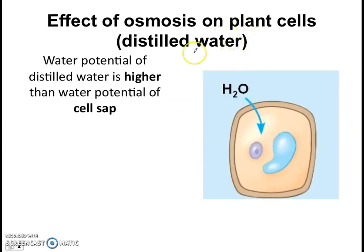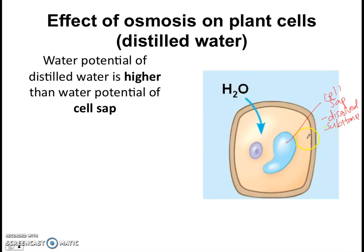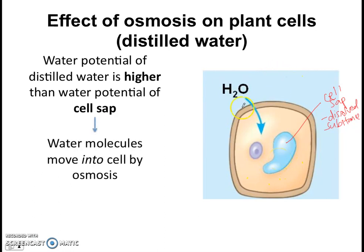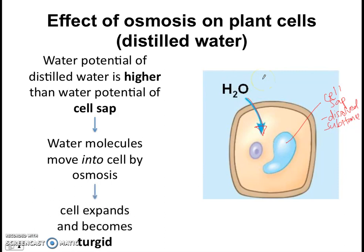What happens when we place a plant cell in distilled water? You need to think about water potential again. The water potential of distilled water is higher than the water potential of the cell sap, because the cell sap contains not only water but some dissolved substances — dissolved sugars, dissolved nutrients. Distilled water outside is just distilled water, so there's a higher water potential. As a result, water molecules will move into the cell by osmosis through the cell membrane, and we say the cell expands and becomes turgid — it looks expanded and is very firm.